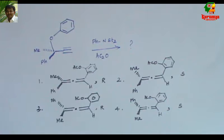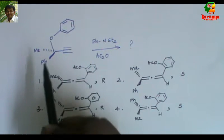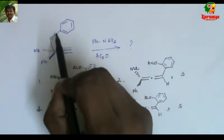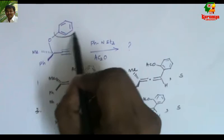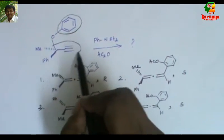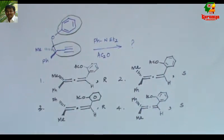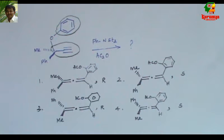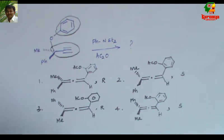If you look at this compound, basically it is phenyl propargyl ether. You may know that allyl vinyl ether will undergo Claisen rearrangement. For Claisen rearrangement, we use allyl vinyl ether.